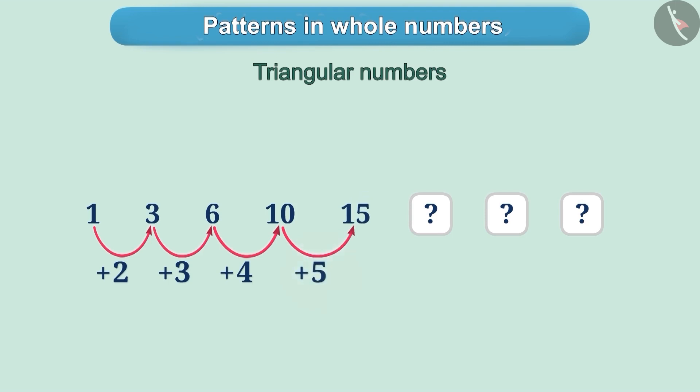Following the same pattern, adding 6 to 15 gives the number 21. Similarly, adding 7 to 21 gives 28 and adding 8 to 28 gives 36.